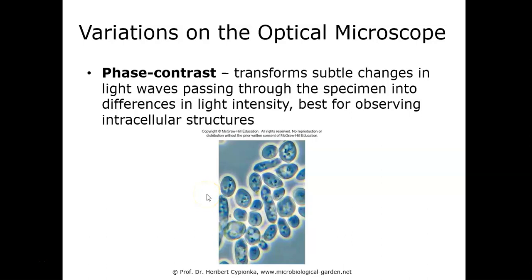Phase contrast microscopy produces cells against a bright background and is helpful for viewing intracellular structures that are unstained. It takes advantage of subtle differences in density — varying densities cause subtle changes in light waves passing through the specimen, allowing us to see intracellular structures within a cell.